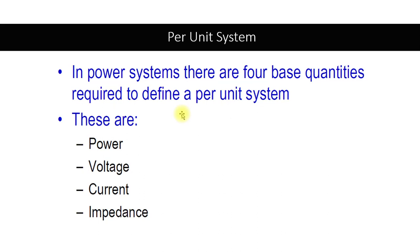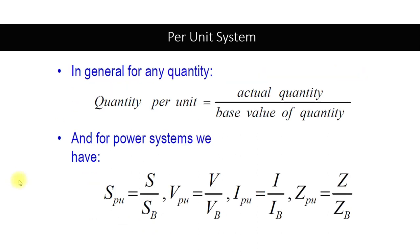The four quantities are: power in the form of S, voltage V, current I, and impedance Z. In general, any quantity in per unit form equals the actual quantity divided by the base value of that quantity. The base value is the benchmark selected by us in order to perform the per unit analysis.